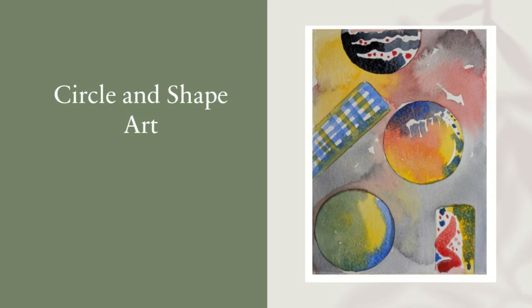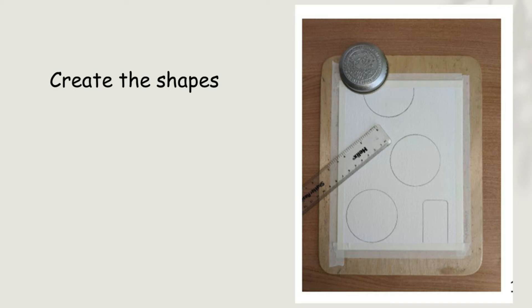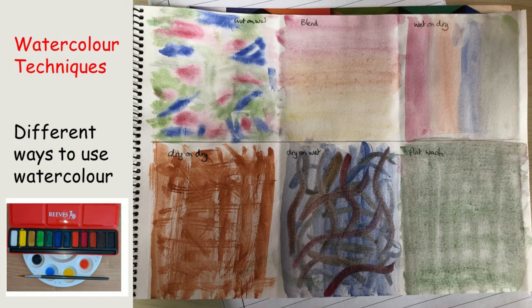Today year 2 we will be creating a shape art painting. Firstly we will draw the shapes using a round object and a ruler. Then we'll use the watercolour techniques we started to learn last week.